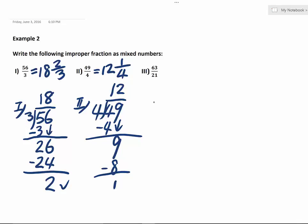So the last one is 63 over 21. Actually, it's 21 going into 63, 3 times. 3 times 21 is 63.